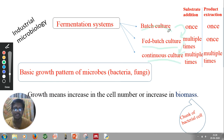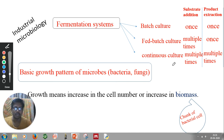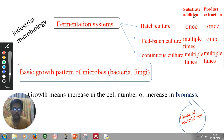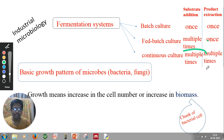Batch culture has some disadvantages, which is why fed-batch culture was developed, and now continuous culture is commonly used for large-scale production of products like alcoholic beverages. In batch culture, substrate addition and product extraction each happen once. In fed-batch culture, substrate is added multiple times but product extraction happens once. In continuous culture, substrate is added and product is extracted repeatedly in a continuous manner.